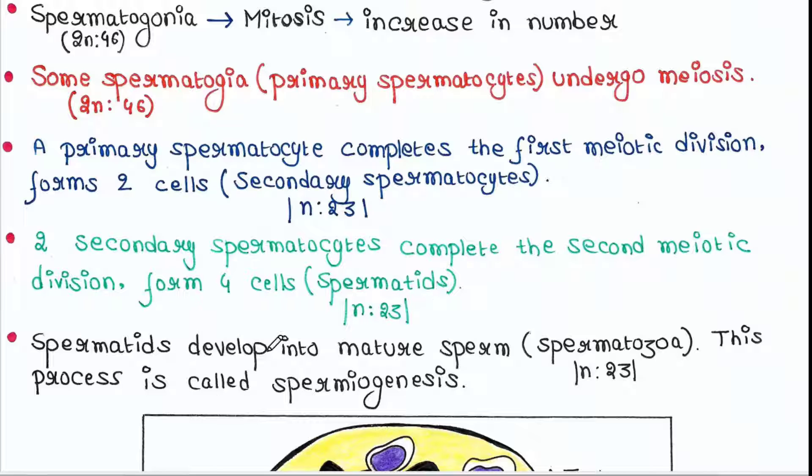These spermatids develop into mature sperm. This process is called spermiogenesis. The development of sperm from spermatids is called spermiogenesis. These mature sperms are also called spermatozoa. They are haploid cells, each contains 23 chromosomes.